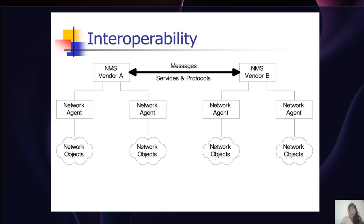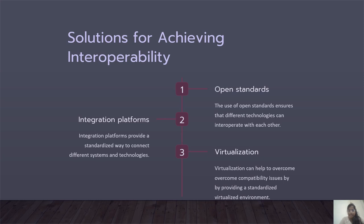Here is a quick diagram for interoperability, where services and protocols or messages are shared from one network management system to another. This is similar to the Dumbbell architecture, but divides into different network agents and network objects which share services and protocols between each other. The solutions for achieving interoperability are open standards, integration platforms and virtualization. Open standards ensure that different technologies can interoperate with each other. Integration platforms provide a standardized way to connect different systems and technologies. Virtualization can also help overcome compatibility issues by providing a standardized virtualized environment.